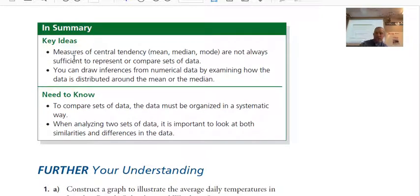So, the key idea is measures of central tendency, we discussed mean, median, mode, are not always sufficient to represent or compare sets of data. So, they are important, but there are other factors as we've talked about. You can draw inferences from, you infer, you can draw conclusions here, from numerical data by examining how the data is distributed about the mean or the median. So, this whole idea of distribution is something that you need to consider as well in making your judgments.